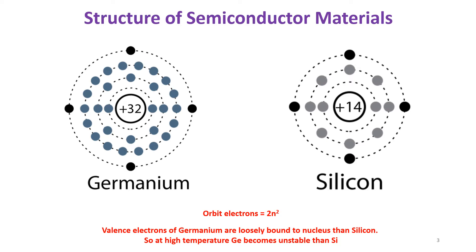The atomic number of germanium is 32 and silicon is 14. The number of orbit electrons depends on the expression 2n². As we know from the basics, the number of protons is equal to the number of electrons in a neutral atom, and that is also equal to the atomic number. So germanium has 32 electrons and 32 protons; similarly silicon has 14 protons and 14 electrons. The protons and neutrons are on the nucleus, and the electrons are on the orbits.